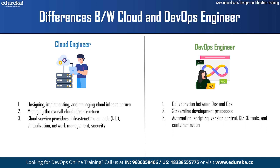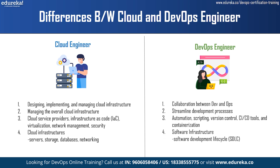DevOps engineers typically should have expertise in automation, scripting, version control, CI/CD tools and containerization. They often work with tools like Jenkins, Docker, Kubernetes and Ansible. Cloud engineers are responsible for managing cloud infrastructure such as servers, storage, databases, networking and related services, whereas a DevOps engineer mainly deals with software development — they often need to understand and support the software development lifecycle and collaborate with developers.